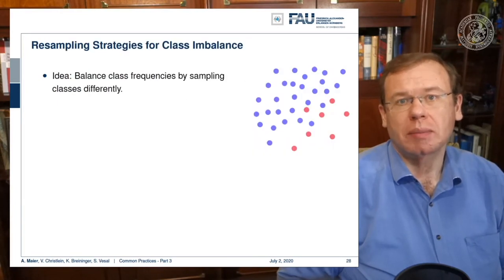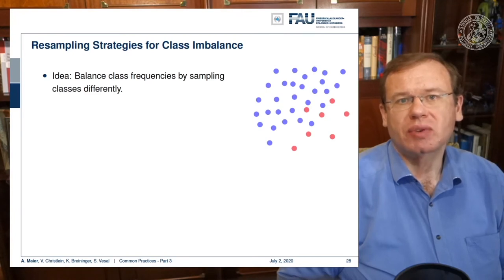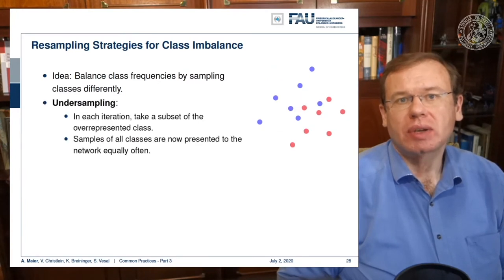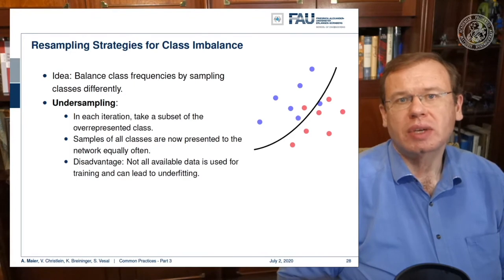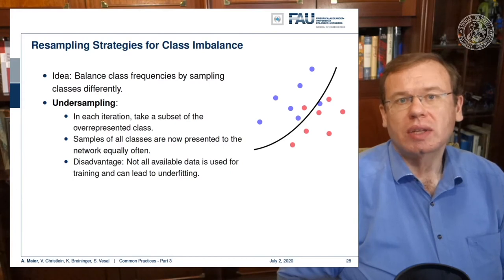One thing you can do is resampling. The idea is that you balance the class frequencies by sampling classes differently. This means you have to throw away a lot of the training data of the most frequent class. This way, you train a classifier that is balanced towards both classes.